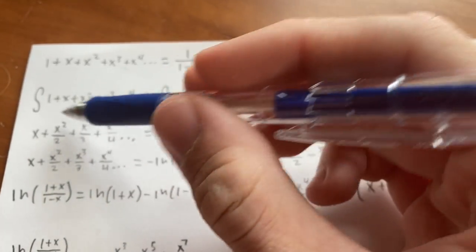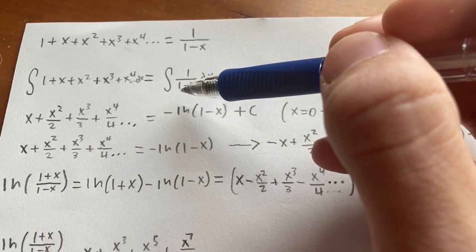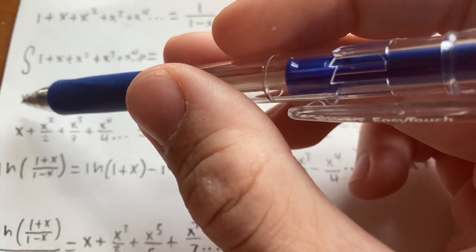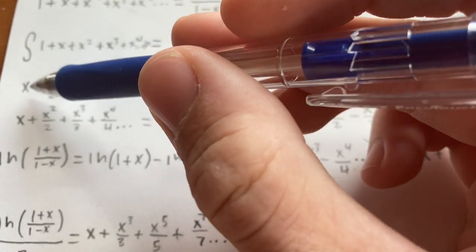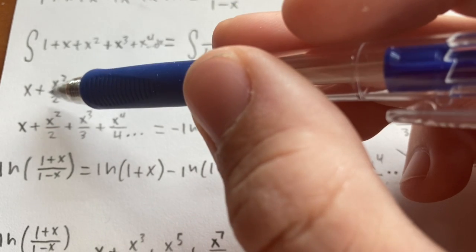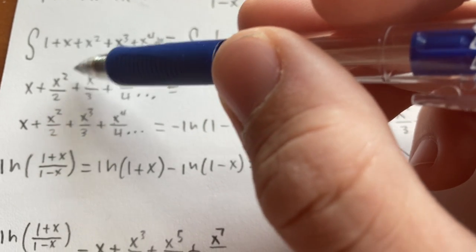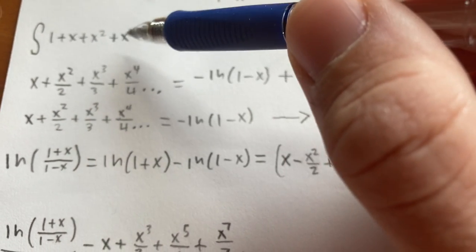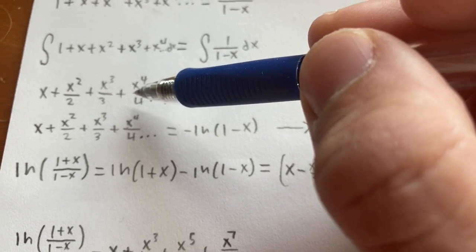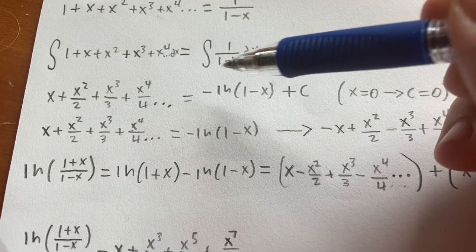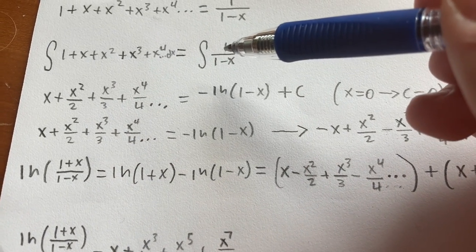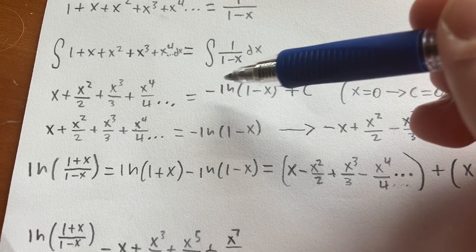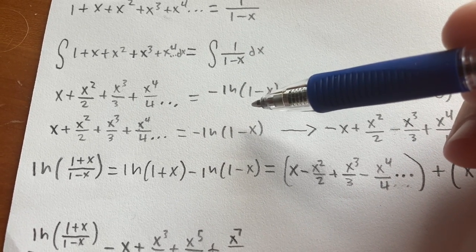Next, we are going to integrate on both sides. We can do this term-wise on the left-hand side, so we get that the first term becomes x, the second term becomes x squared divided by 2, the third term becomes x cubed over 3, the fourth term becomes x to the fourth over 4, etc. The right-hand side is a basic calculus problem, and it is equal to negative natural log of 1 minus x.